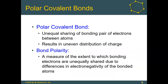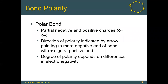So what does it mean if a bond is polar? If it's a polar covalent bond, the bonding pair of electrons is not shared equally between the atoms, resulting in an uneven distribution of charge. Bond polarity is a measure of the extent to which bonding electrons are unequally shared due to differences in electronegativity of the bonded atoms. When you have polar bonds, you develop partial negative and partial positive charges on opposite ends of the bond.